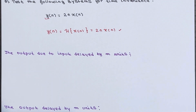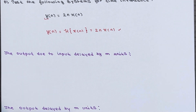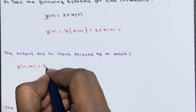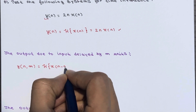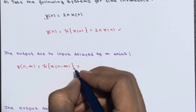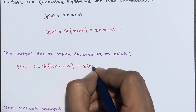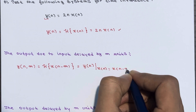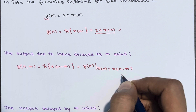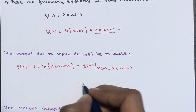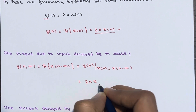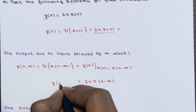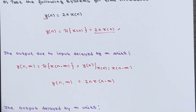First, calculate the output due to the input delayed by m units — that is, y(n, m). This is the transform of x(n - m), which is y(n) itself when x(n) is replaced by x(n - m). So wherever x(n) is present in the equation, replace it with x(n - m). It becomes 2n·x(n - m). This is y(n, m) — the output due to input delayed by m units.